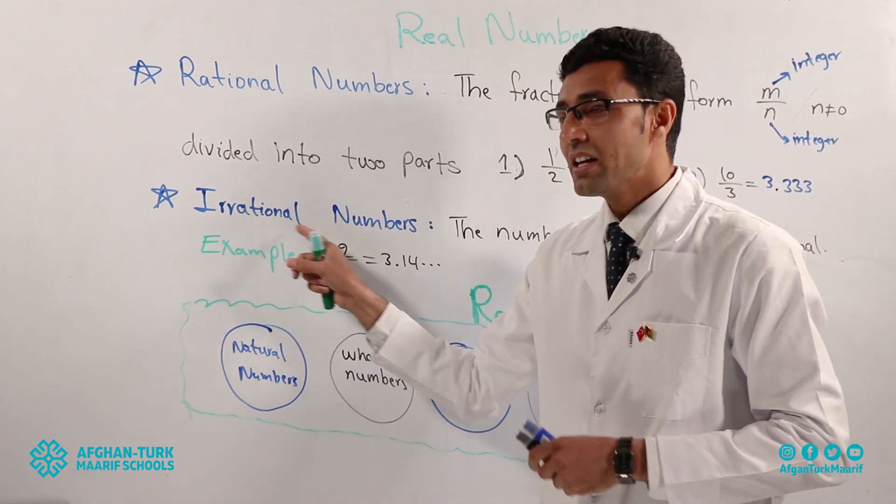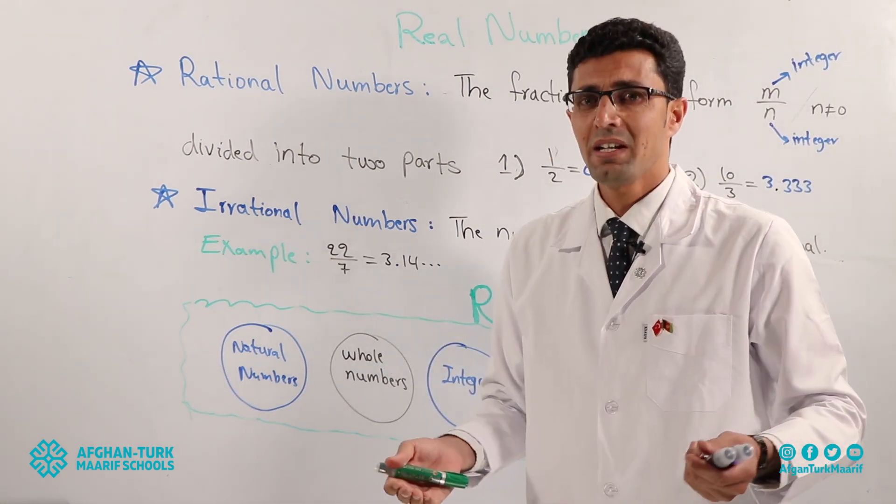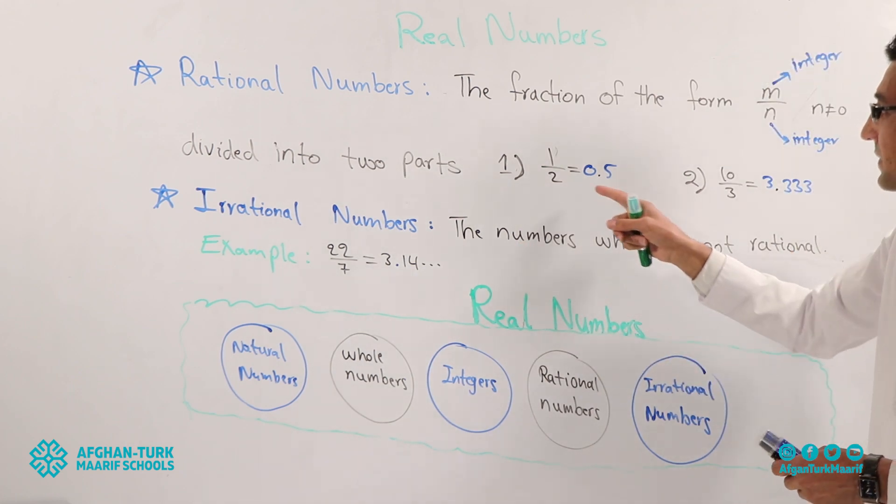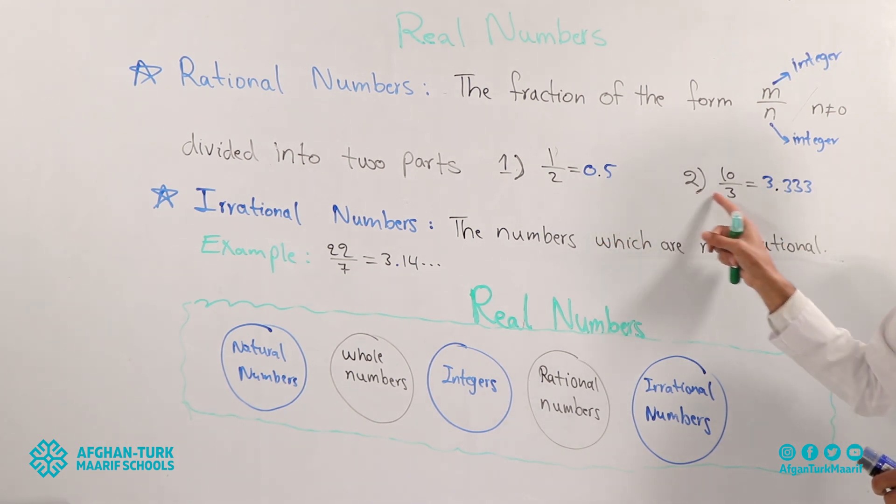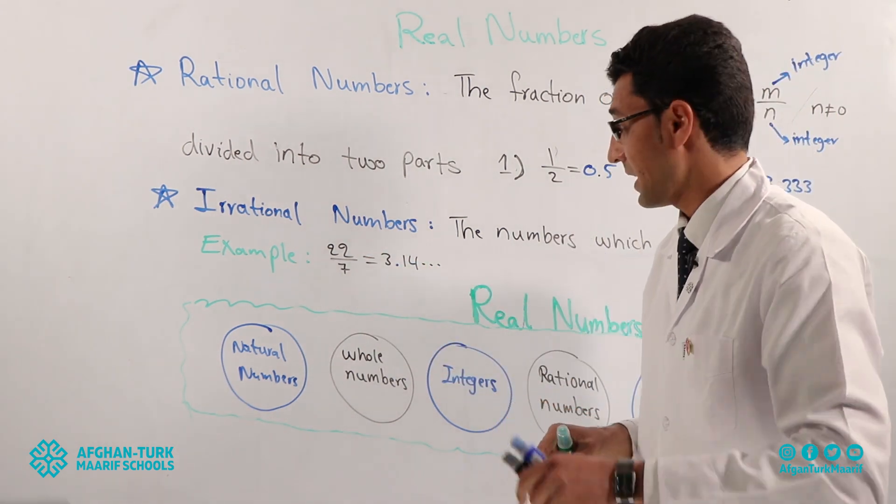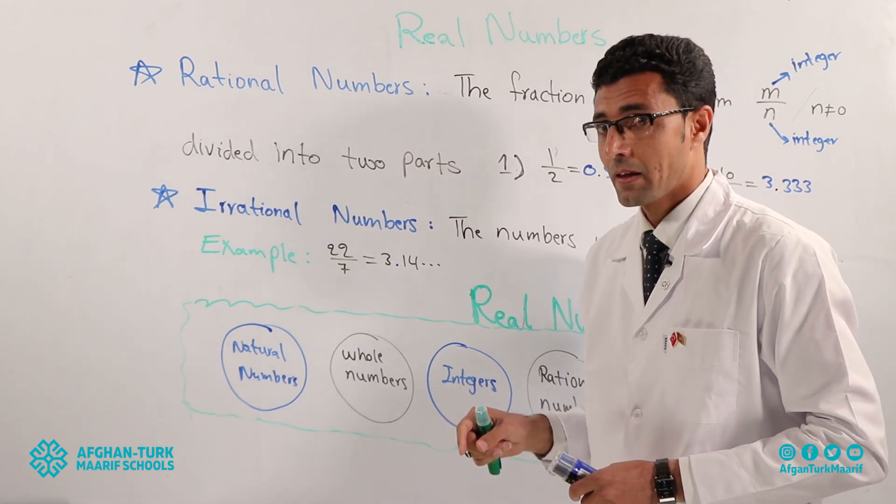And the next. Irrational numbers. It is very easy. Very simple. The numbers which are not rational. If the numbers are not rational, we call them as irrational.